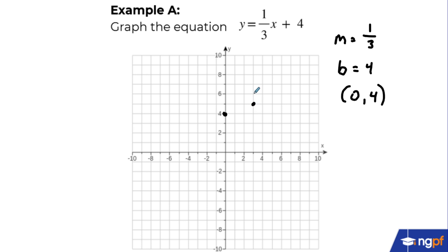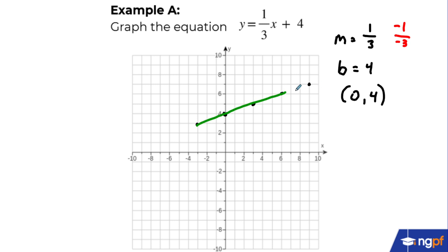We repeat this — up 1, to the right by 3 — as many times as needed to generate new points. If you run off the graph, you can also go in the opposite direction: positive 1 and positive 3 is equivalent to negative 1 and negative 3, meaning you can also move down and to the left. Once you have enough points, draw a line through them with arrows on each end, since the line continues off the graph.